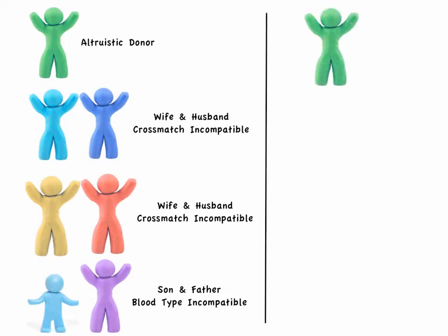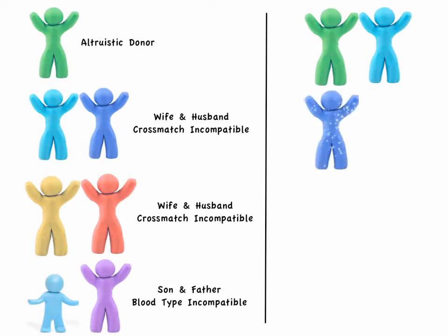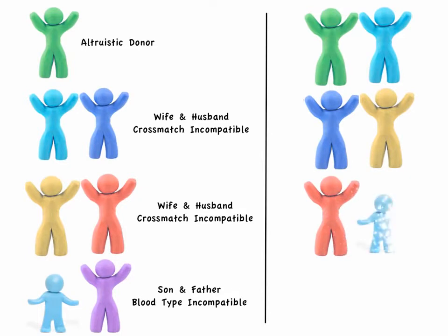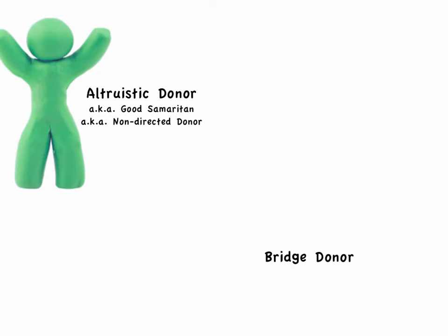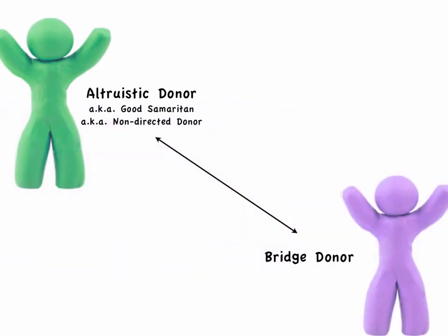As you can see, the altruistic donor gave her kidney to the wife of the first pair. That woman's husband then gave his kidney to the wife in the second pair. Her husband then gave his kidney to the five-year-old boy who needed a transplant. The boy's father then became a bridge donor who could start another transplant chain at a later date. The bridge donor no longer has a specific recipient because his intended recipient — his son — has already received a kidney through the transplant chain.